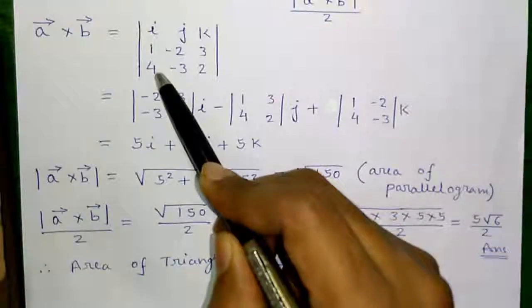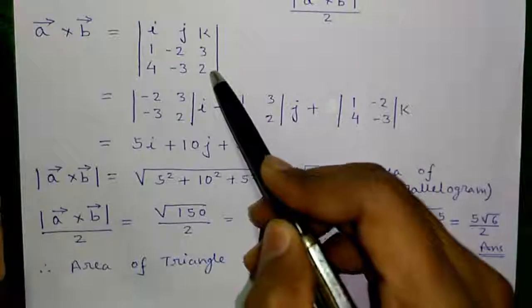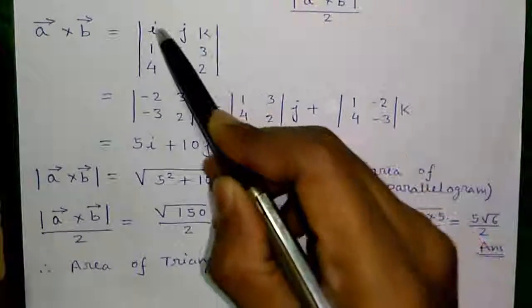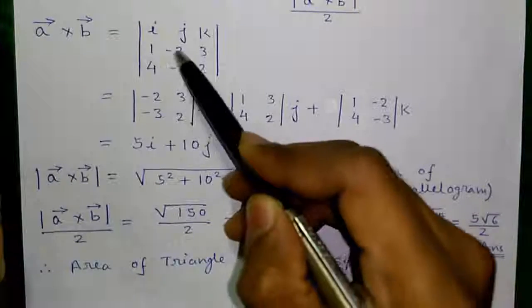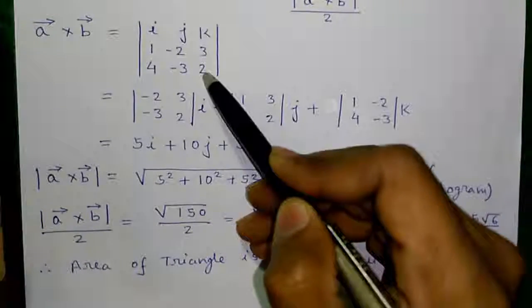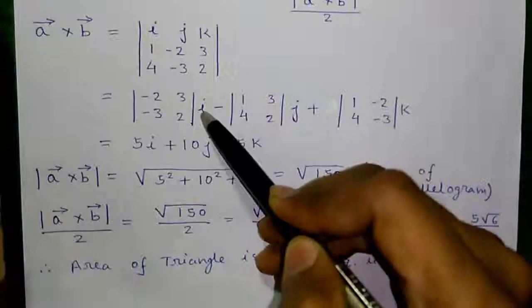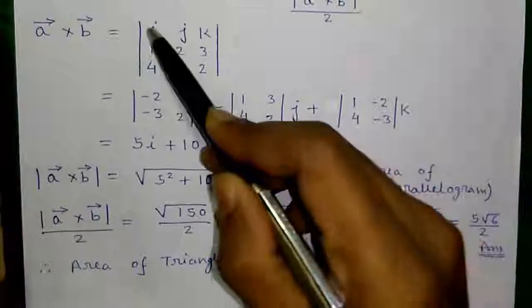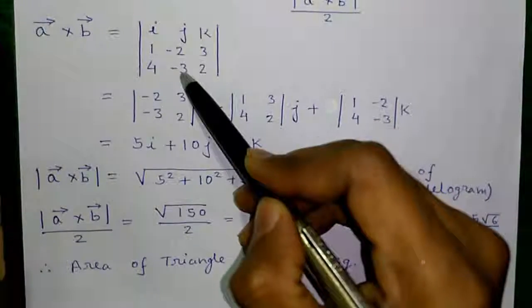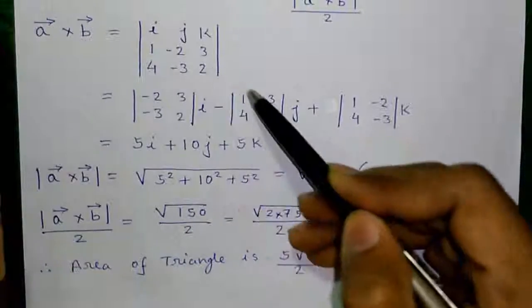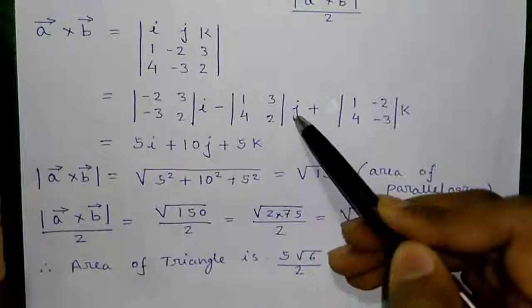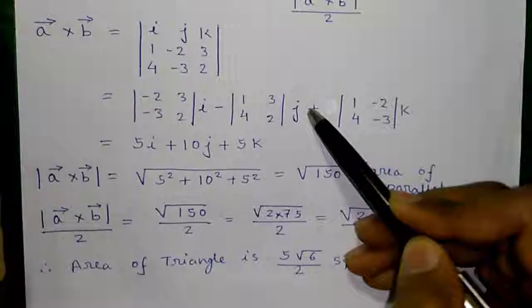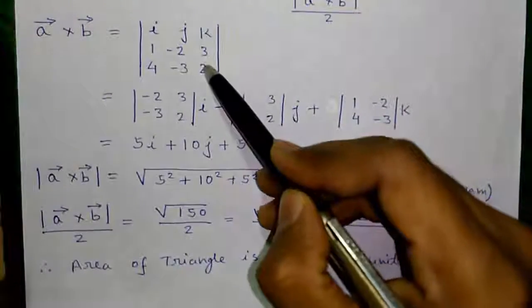Let's find determinant of this matrix which is given by hide row 1 and column 1. So we are left with -2, -3, 3 and 2, -2, -3, 3 and 2 into I minus hide row 1 and column 2. So we are left with 1, 4, 3 and 2, 1, 4, 3 and 2 into J